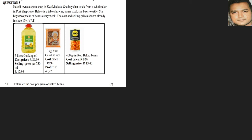A lady owns a spaza shop in Kormagladla. She buys stock from a wholesaler in Potshepstam. Below is a table showing some stock she buys weekly. She buys two packs of beans every week. The cost and selling prices shown below include 15% VAT.